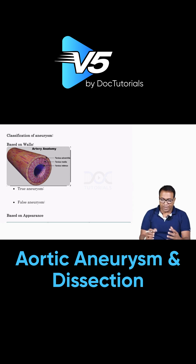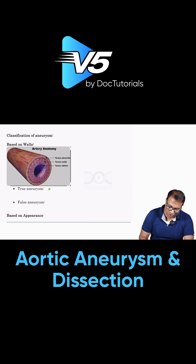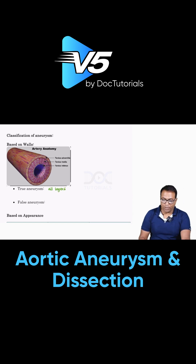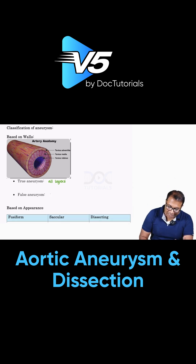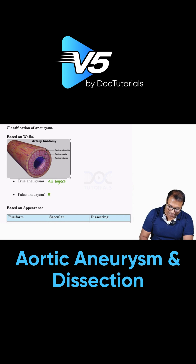If all layers are found in an aneurysm, it is called a true aneurysm. If some layers are missing, it is called a false aneurysm.